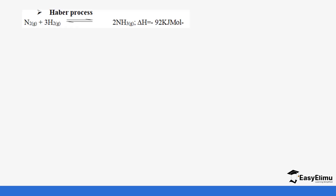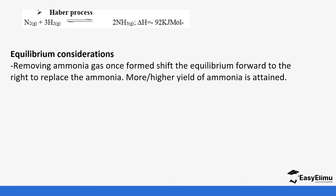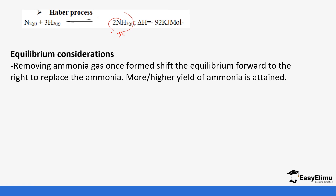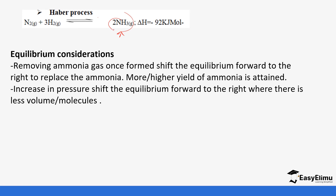One of the common industrial processes is the Haber process — the manufacture of ammonia by the reaction of nitrogen and hydrogen. The reaction is exothermic in nature. Removing ammonia gas once formed shifts the equilibrium forward. If you keep removing the ammonia, the concentration of ammonia decreases and the equilibrium shifts to replace the ammonia being removed, so a higher yield of ammonia is attained.